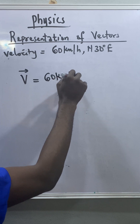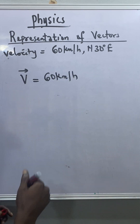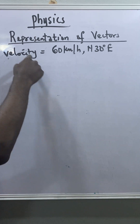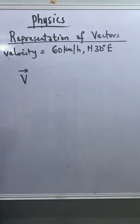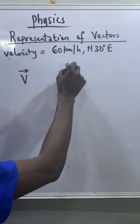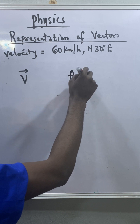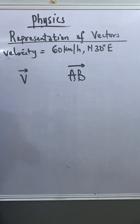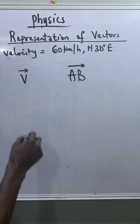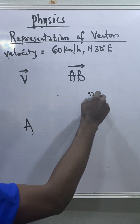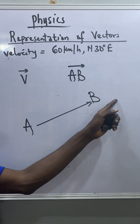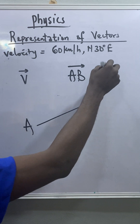Let's say the velocity is v with an arrow on top, written as 60 kilometers per hour. Even without writing the magnitude, writing v with an arrow represents a particular vector — it could be velocity or any other quantity. You can also use double capital letters, such as AB with an arrow, meaning the vector is moving from point A to point B. This can be represented with a line from A to B showing that direction.